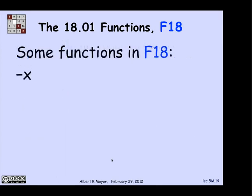Let's look at how this definition works. I claim that, in fact, the function minus x is in F18. How do I build up minus x from the rules? Well, minus 1 is a constant function. So I have that. And x is just the identity function. And I can multiply two functions that I have. So if I multiply minus 1 times x, guess what? I got minus x. So I've just figured out that that function is in F18.